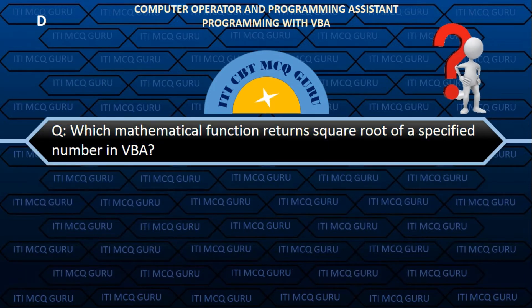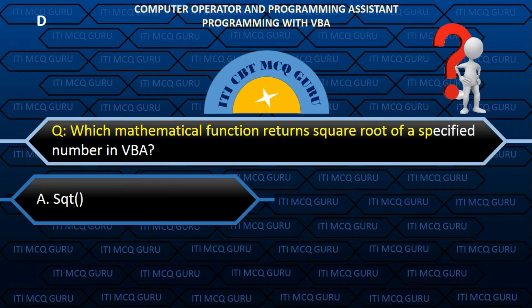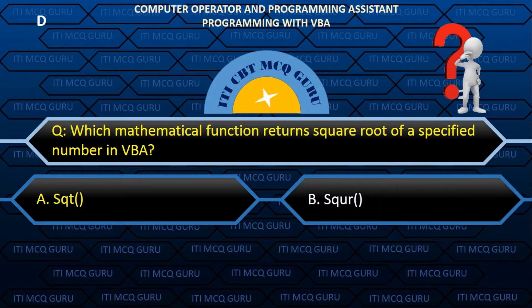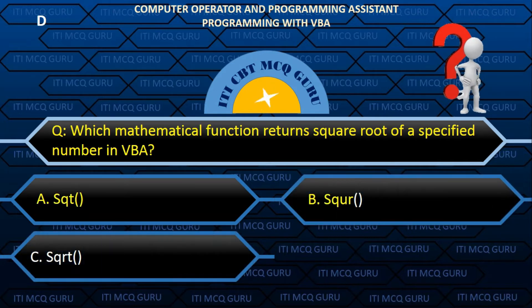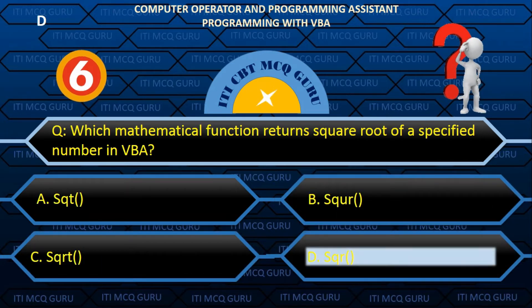Which mathematical function returns the square root of a specified number in VBA? Answer: D. SQR.